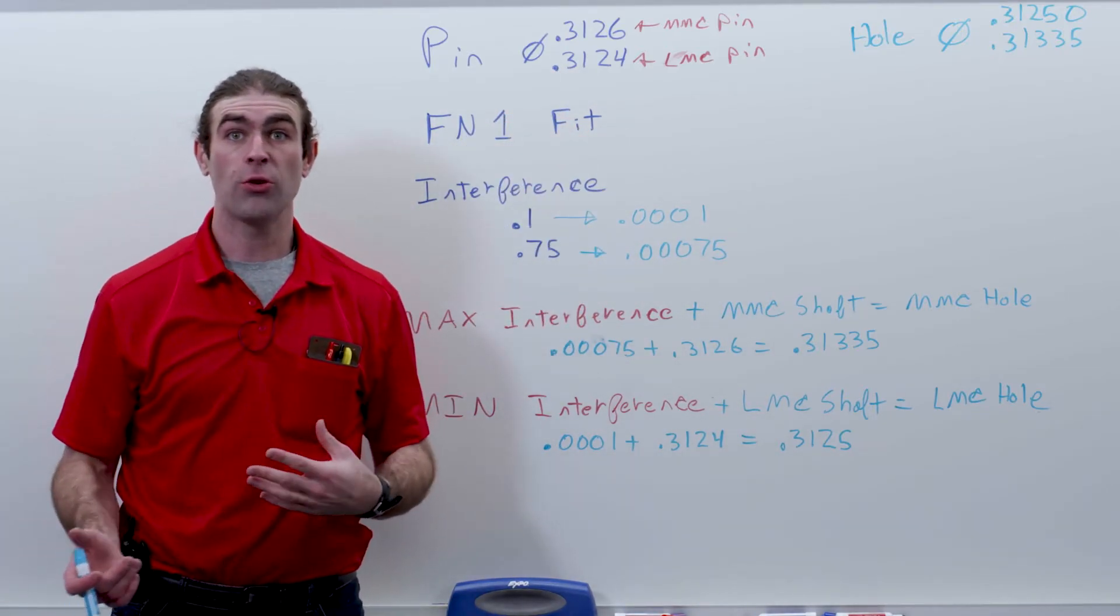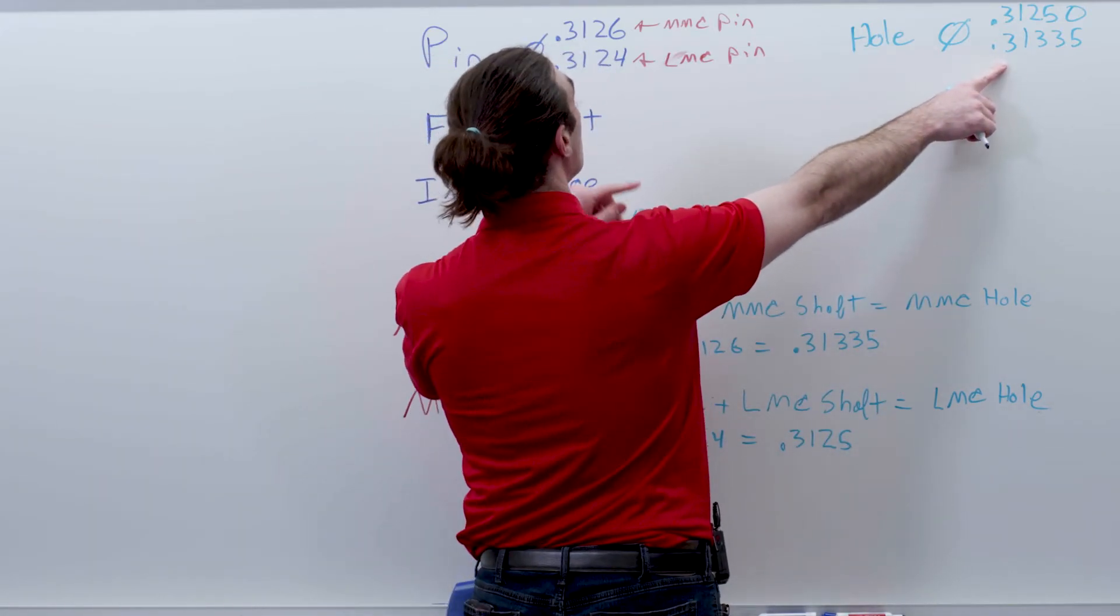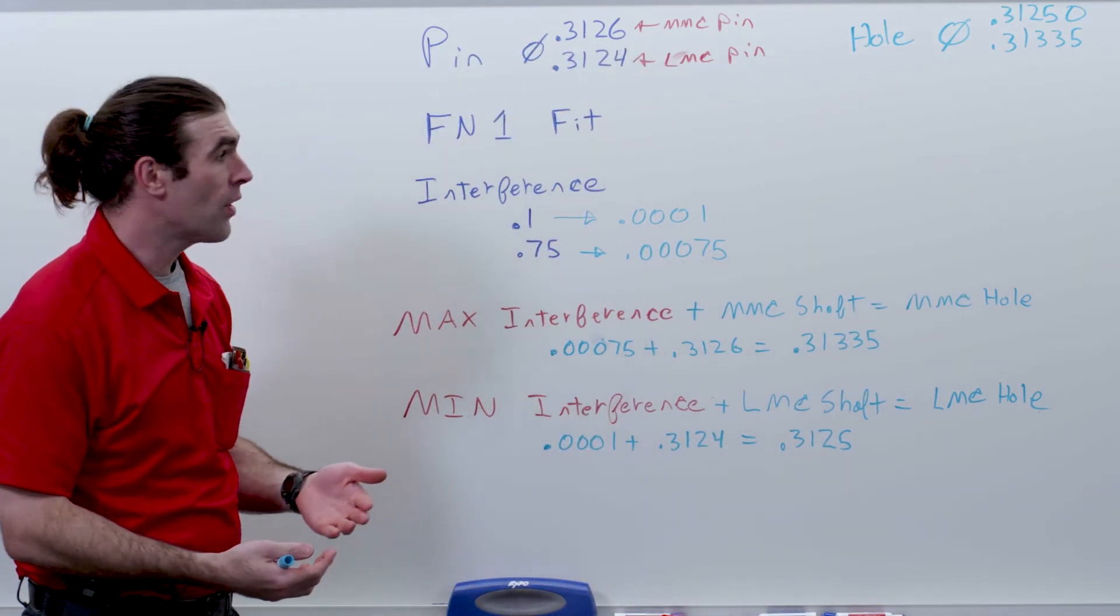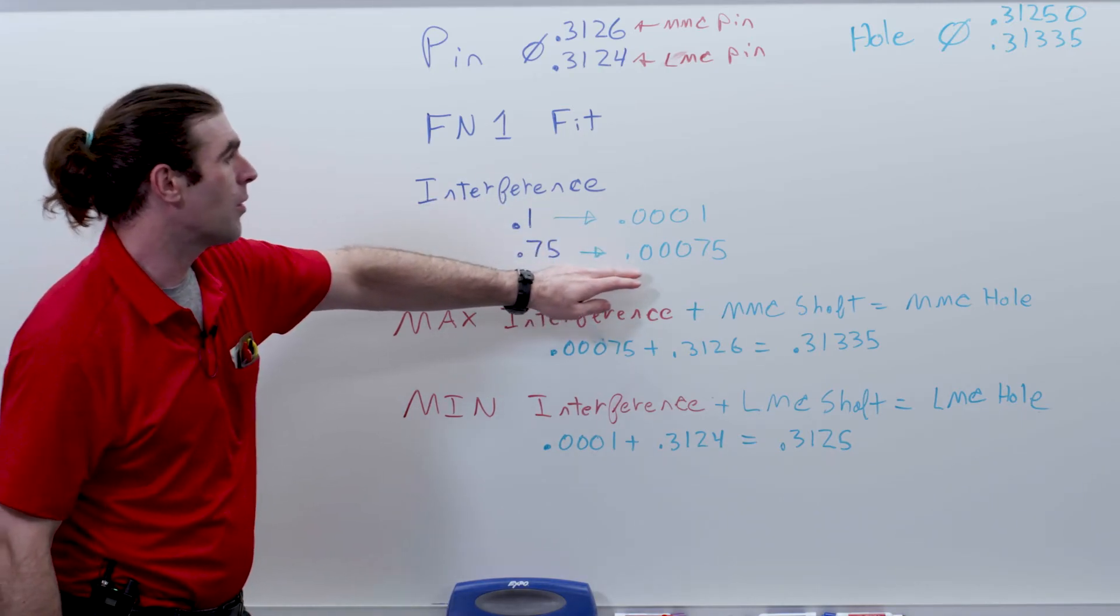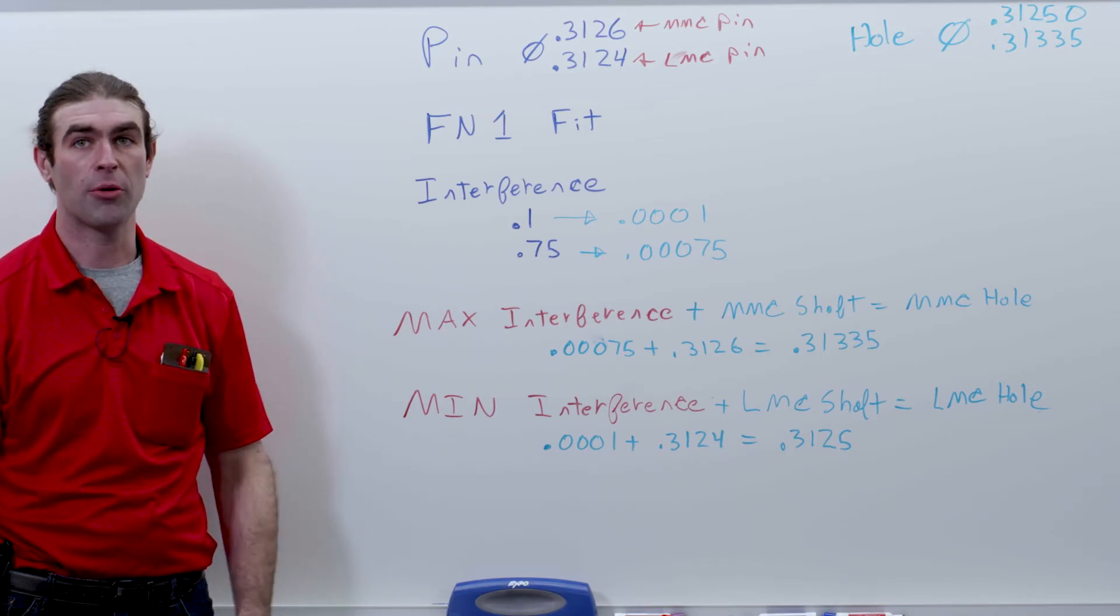The last thing we can do is just check our work. If we compare the MMC of the hole to the MMC of the pin, if we subtract those, we're going to get this number right here, this 0.00075, the maximum interference.